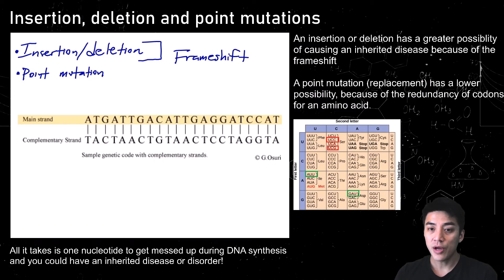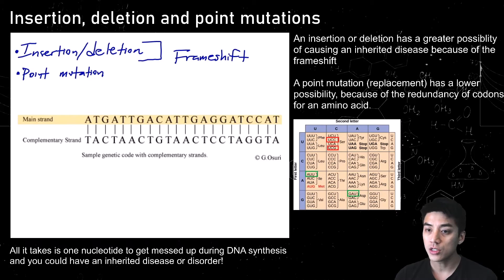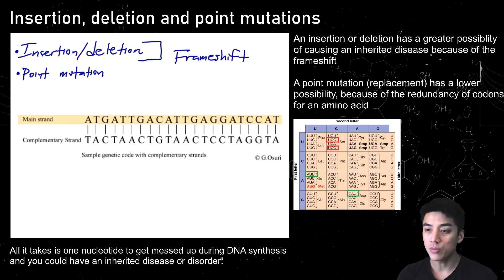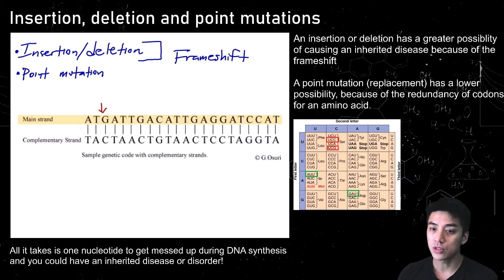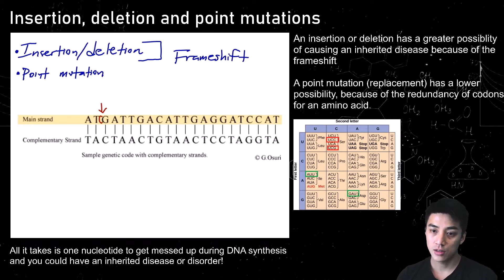Let's compare and contrast the different types of mutations. You have insertion and deletion, which results in a frame shift, and you also have a point mutation, which may or may not be bad. Insertion or deletion is much worse because it can cause an inherited disease since everything got shifted in the chain.